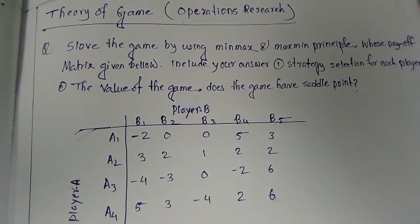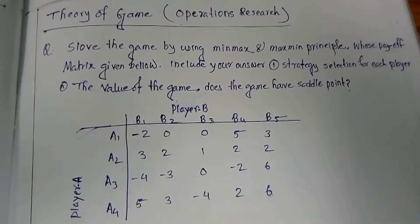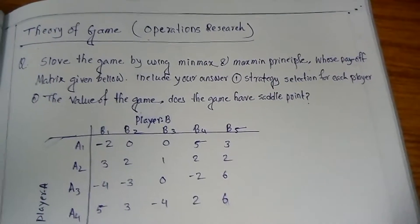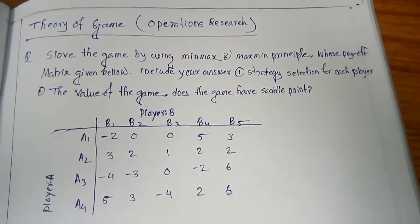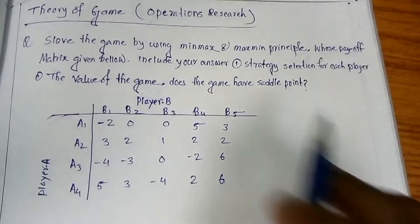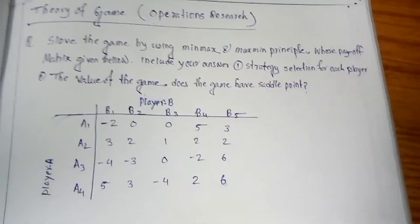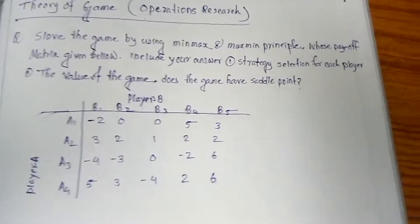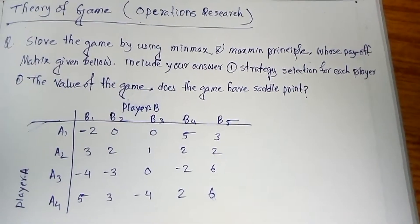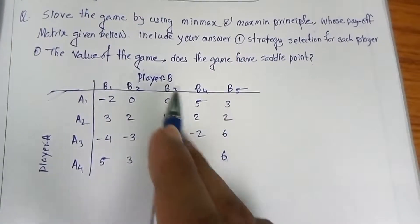Hi guys, very good morning. Today I am talking about game theory — mainly the strategy of games — and its most well-known form: two-percent zero-sum games. This problem is taken from an Operations Research book, page number 398; it is an unsolved problem. I will solve this using the min-max and max-min principle. The matrix is given, and we need to find the optimal strategy solutions for each player, the value of the game, and whether the game has a saddle point.